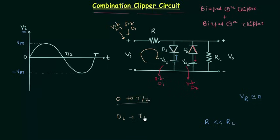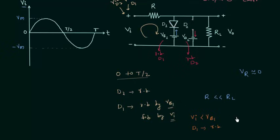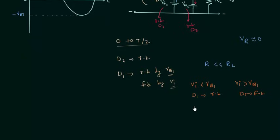During this half cycle, diode D2 will be reverse biased because both Vb2 and Vi are reverse biasing it, so D2 will always remain reverse biased and I will replace it with an open circuit. I am considering ideal diodes. In the case of D1, Vb1 is reverse biasing the diode while Vi is forward biasing it. So there is competition between Vb1 and Vi: if Vi is smaller than Vb1, diode D1 is reverse biased; if Vi is greater than or equal to Vb1, D1 is forward biased. In both conditions, diode D2 is always reverse biased.